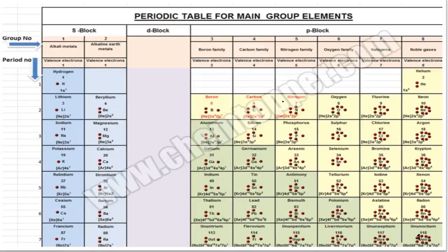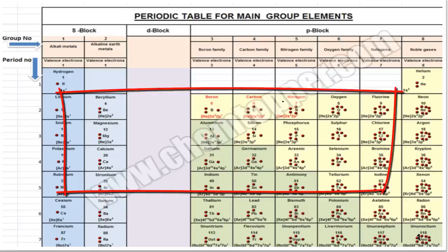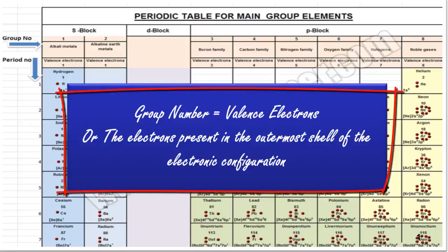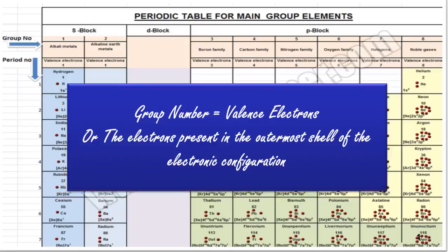As we have discussed earlier, valence electrons can be determined with the help of the group number, or these are the electrons which are present in the outermost shell of the electronic configuration.